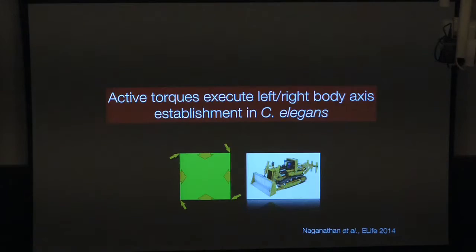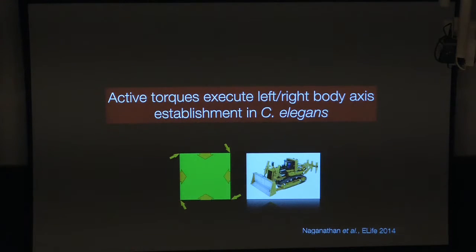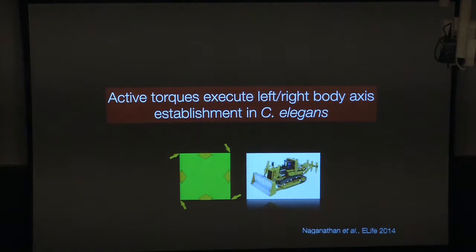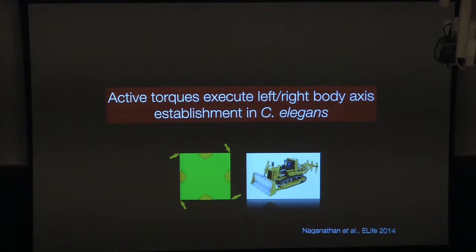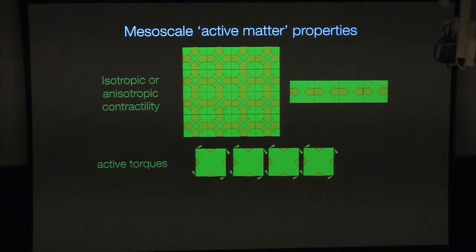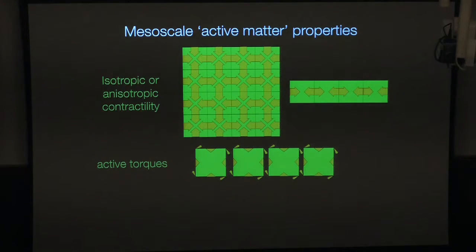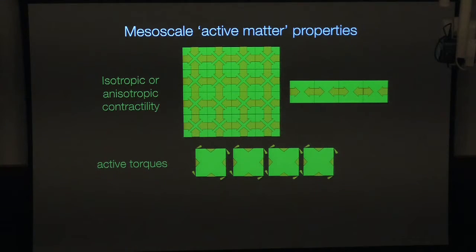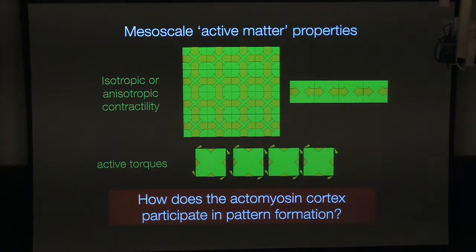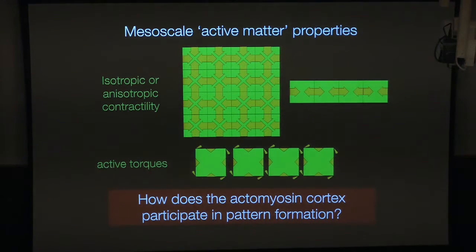When you tune Rho activity — changing active torque in the one-cell stage — you can also control the skew angle. We can reduce it slightly to eighteen degrees and increase it to twenty-eight to thirty degrees. So modifying active torque generation by weak perturbation RNAi of Rho changes the degree of the skew angle. We conclude that active torques execute left-right body axis establishment in C. elegans.